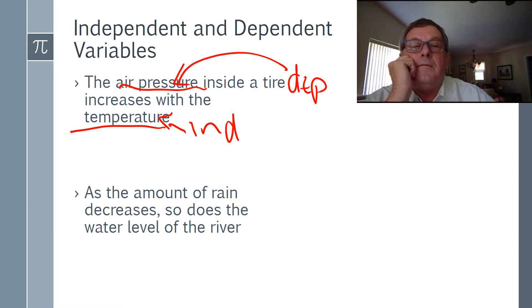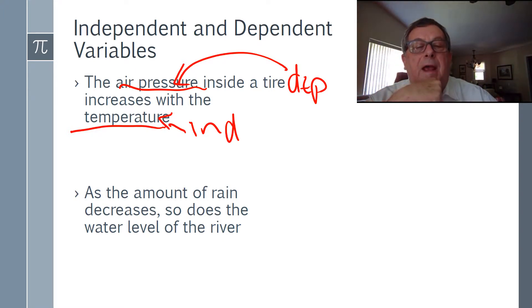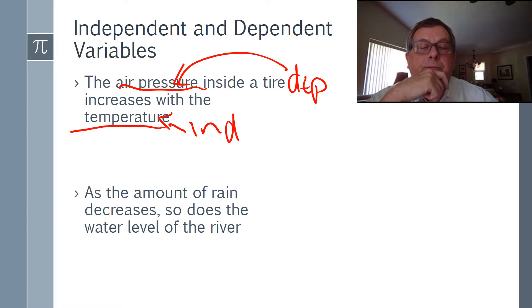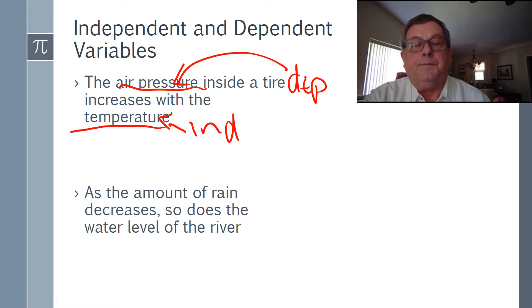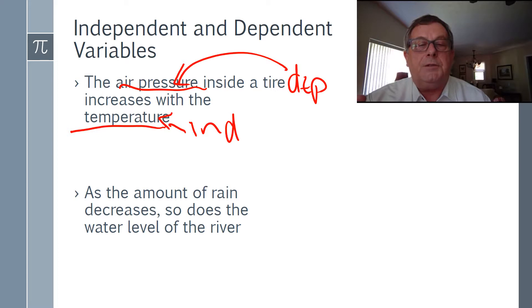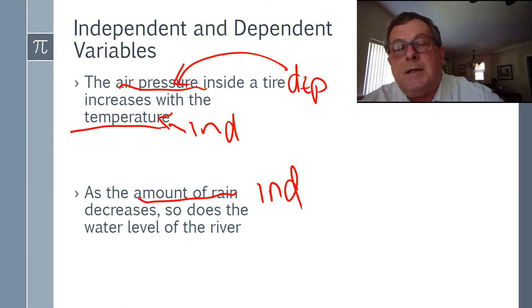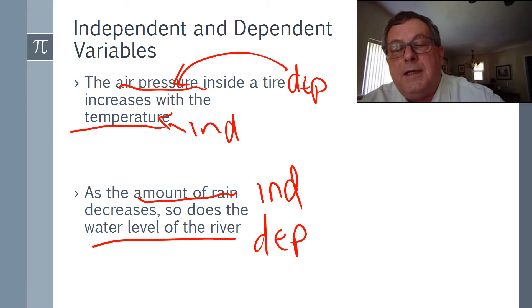When the temperature changes, the air pressure is going to change. Next example: as the amount of rain decreases, so does the water level of the river. What causes the water level to change? The amount of rain. So the amount of rain is the independent variable, and the water level of the river is the dependent variable.